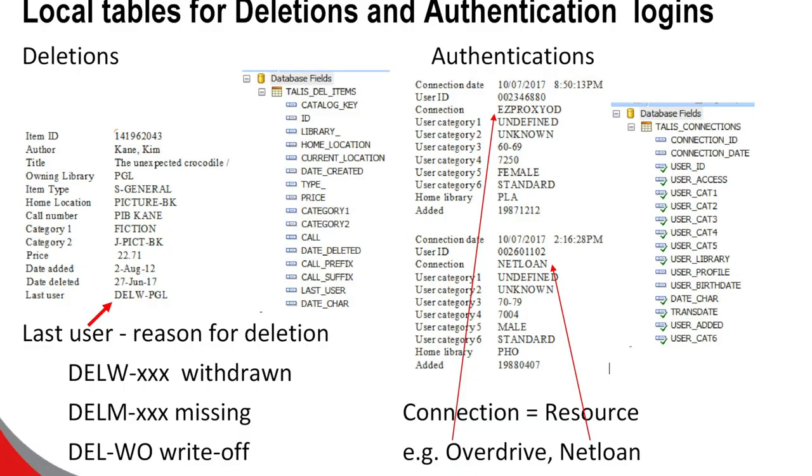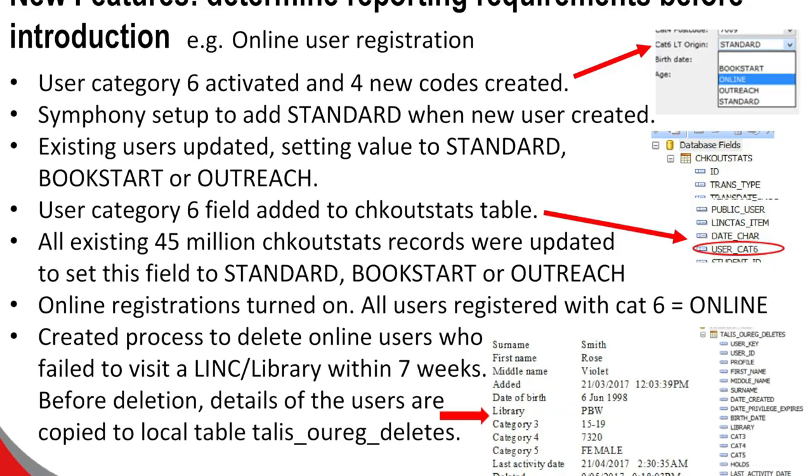On the left-hand side you can see two transactions from the history log file — that's all we have: where it occurred (the first one at a self-issue terminal, the second by staff), the user, and the item. That information is then enhanced with all the user categories, item categories, when the user was added, when the item was added, and extra information about the user and item. You then have very detailed data on who was borrowing what, so you can get a very detailed breakdown of the borrowing patterns of your clients. We have been doing this since day one — 15th of September 2009 — and there are now 51 million records in this table.